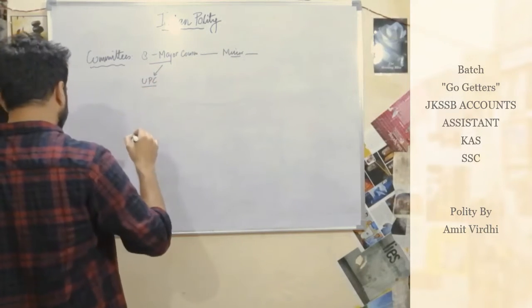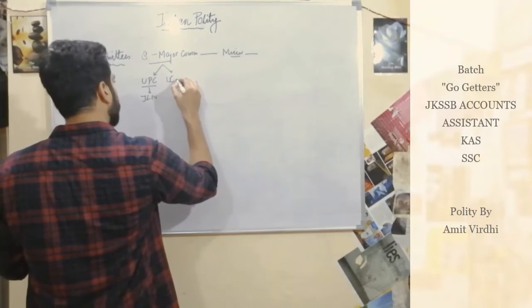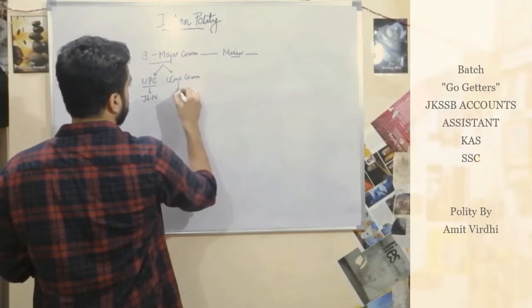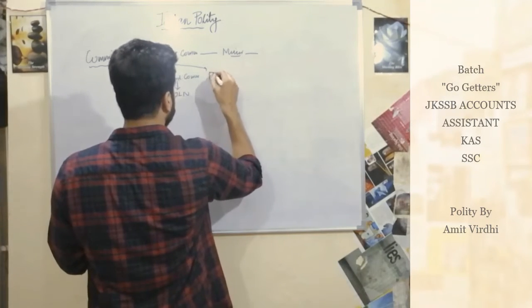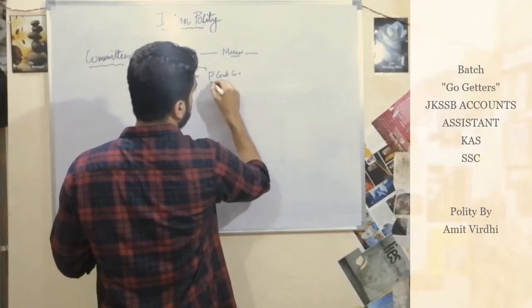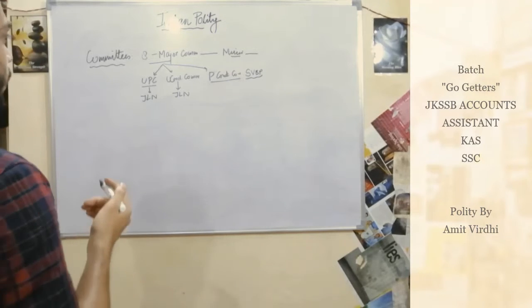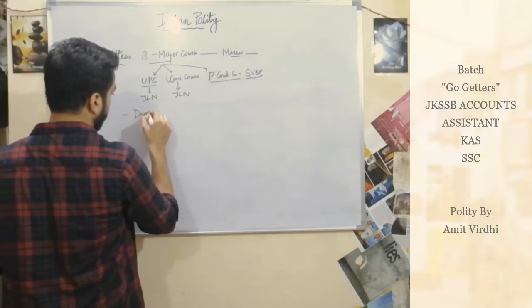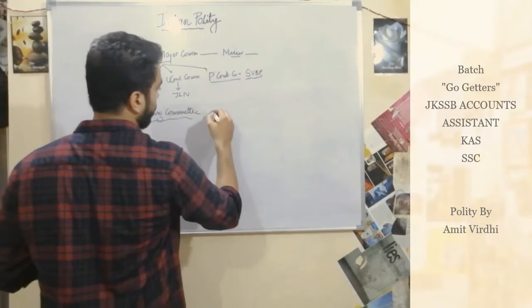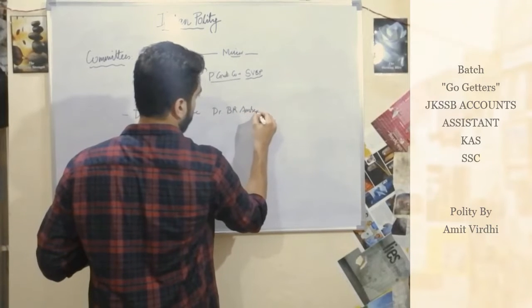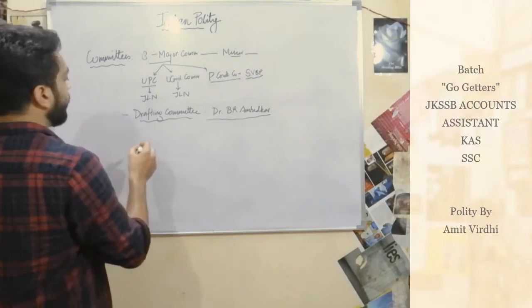For example, the Union Power Committee, whose chairman was Jawaharlal Nehru. The second committee is the Union Constitutional Committee, also chaired by Jawaharlal Nehru. There were also other important committees. One of the committees responsible for making rules — a very significant role — was chaired by Dr. B.R. Ambedkar.